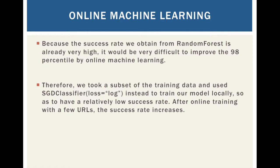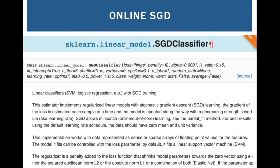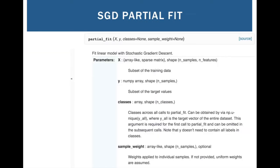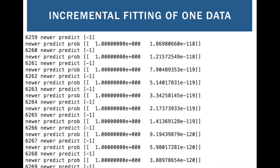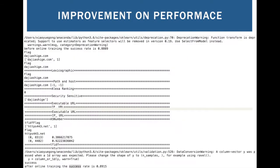After online training with a few extra URLs, the success rate increases. Using the SGD classifier with partial fit, which allows mini-batch or online training, and normalizing the feature vectors to have mean zero and variance one, we got an improvement in performance. This is a screenshot of the incremental fitting of one data point. Before online training, the success rate was 88%; after online training, the success rate improved to 89.15%.